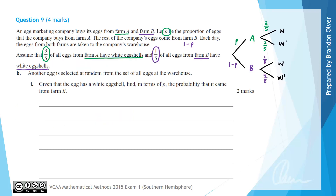For part B, another egg is selected at random from the set of all eggs at the warehouse. Part 1 says: given that the egg has a white egg shell, find in terms of P the probability it came from farm B. We interpret this as the probability that the egg came from farm B given that it had a white egg shell.